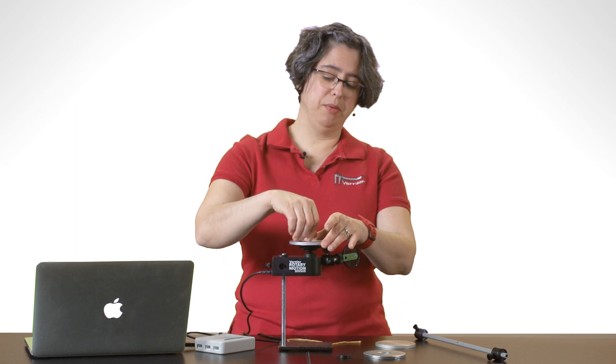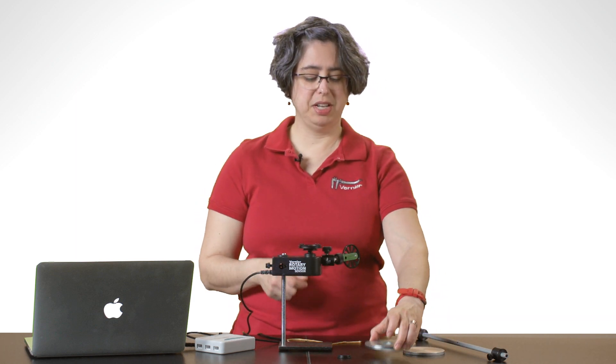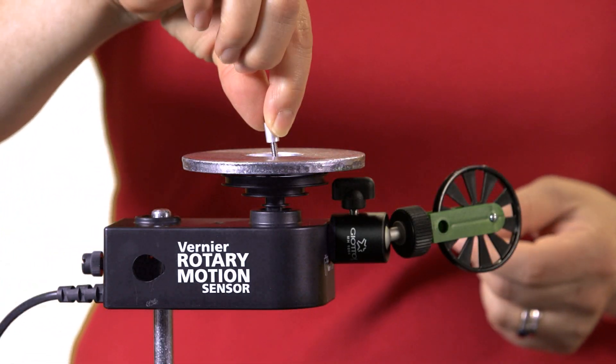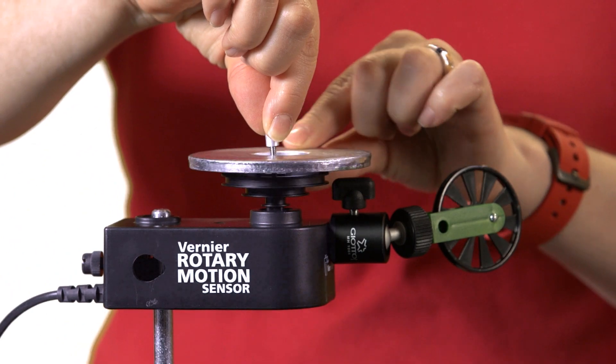Finally, you might be wondering how to attach the steel washer since the hole is much too large for the screw and that can wobble around.